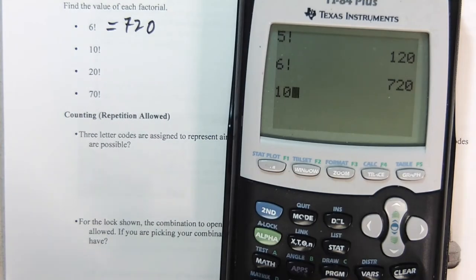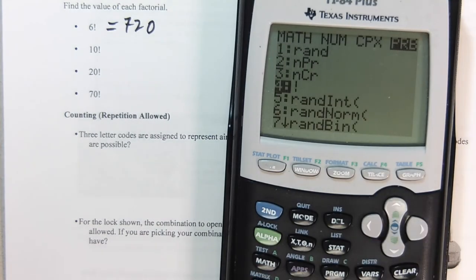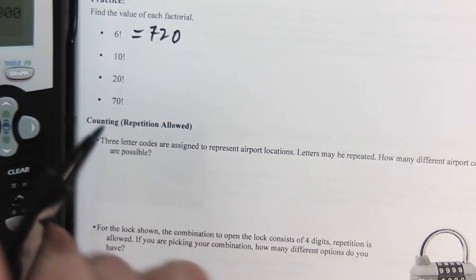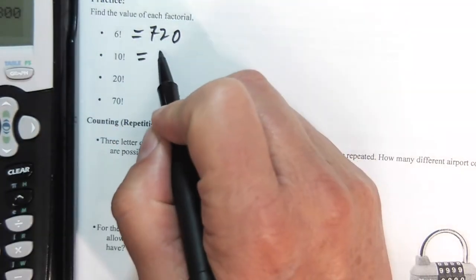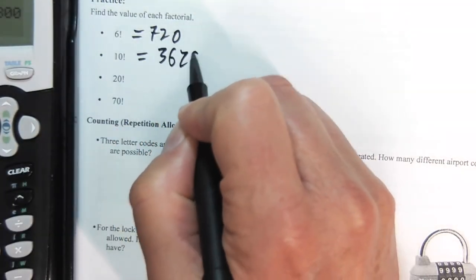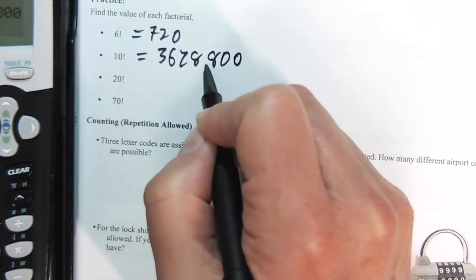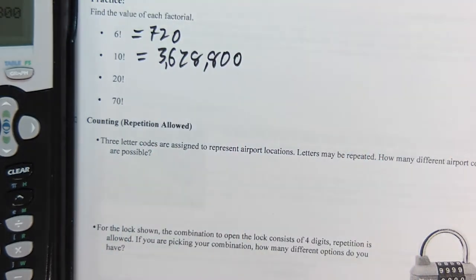10 factorial is a big number, obviously. 3,628,800. Three million, six hundred, twenty-eight thousand, eight hundred.